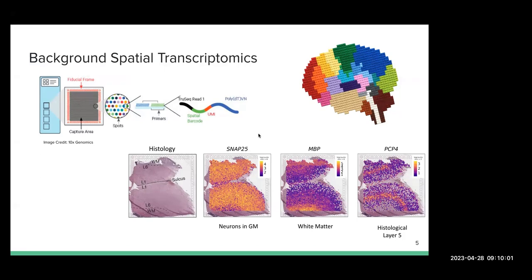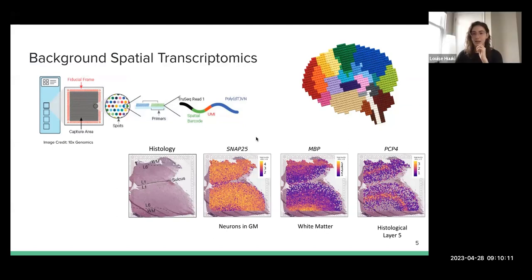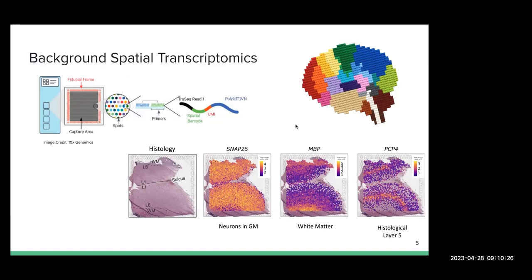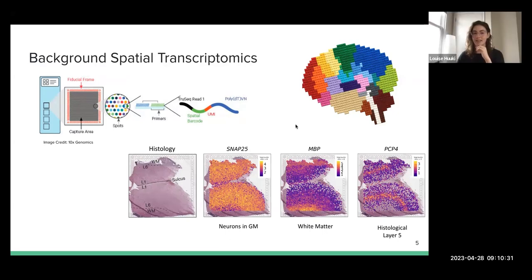Does anybody have any questions? What's the cellular resolution — is it single cell? For Visium, it's not. The average is about three cells per spot, but it varies based on the types of cells, because cells in the brain can be very different sizes. The median is about three, so we are capturing multiple cells and maybe multiple cell types. They're hoping to get this down to one cell, but the technology we use in this project is not there yet.